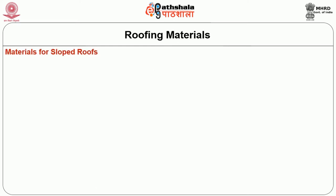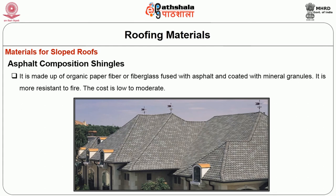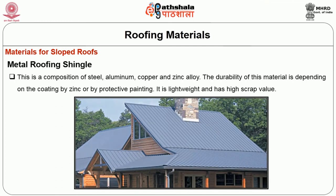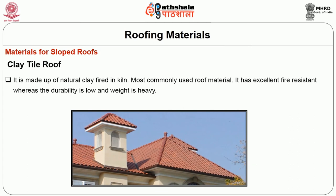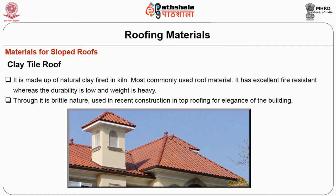Materials for sloped roofs: Asphalt composition shingles are made up of organic paper fiber or fiberglass fused with asphalt and coated with mineral granules. They are more resistant to fire and low to moderate in cost. Metal roofing shingles are a combination of steel, aluminum, copper and zinc alloy. Their durability depends on coating with zinc or protective painting; they are lightweight with high scrap value. Clay tile roof is made from natural clay fired in a kiln — the most commonly used roof material. It has excellent fire resistance but low durability, high weight and brittle nature.